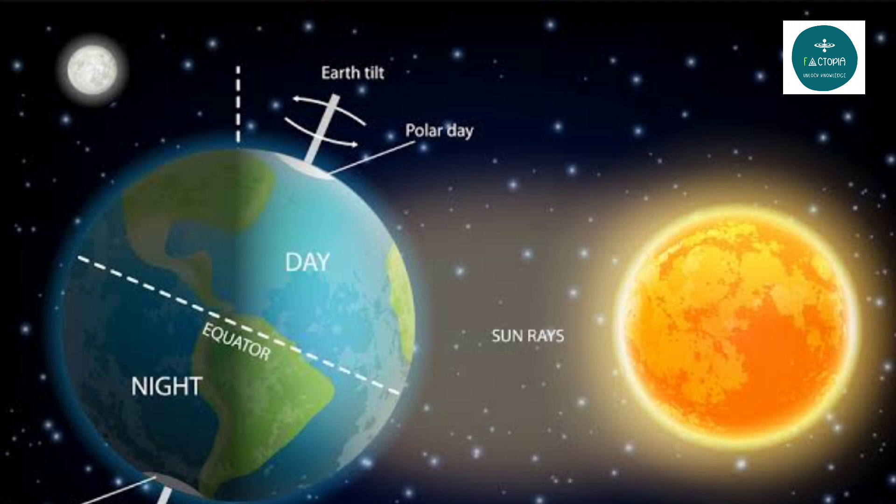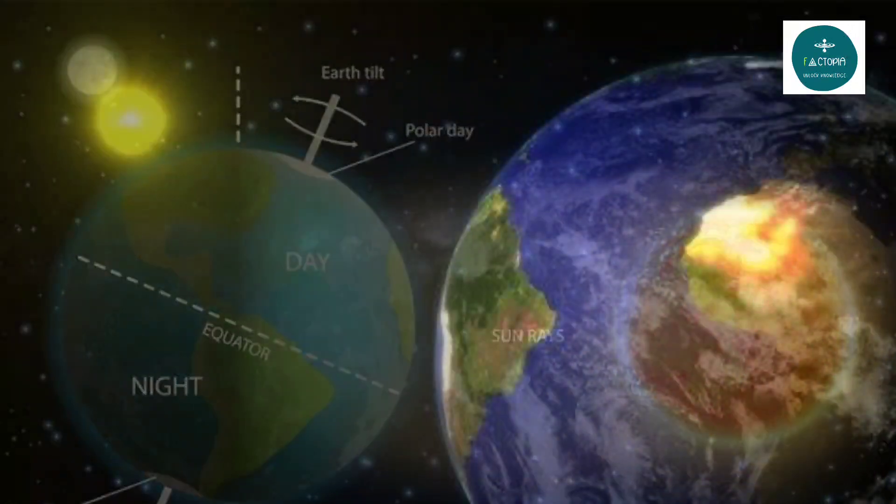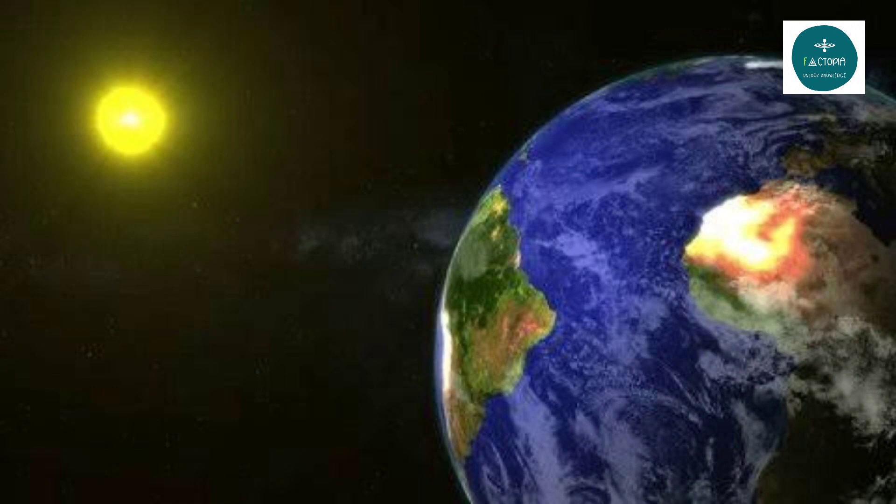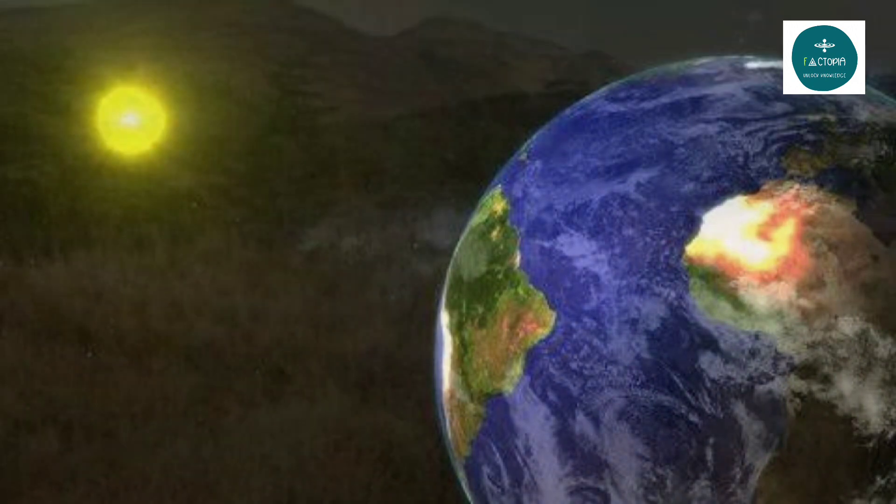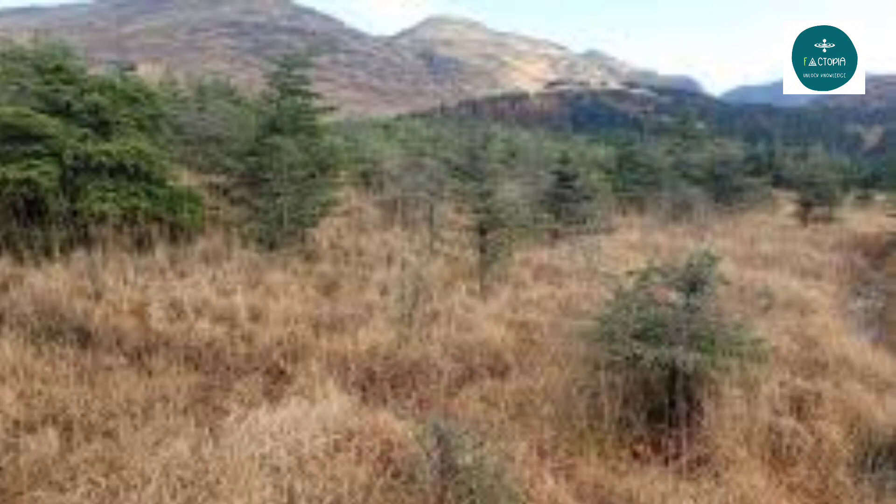Day-night cycle. The most immediate and noticeable effect would be the cessation of the day-night cycle. Half of the Earth would be in constant daylight, while the other half would be in perpetual darkness. This would have profound implications for climate, temperature, and ecosystems.